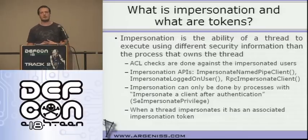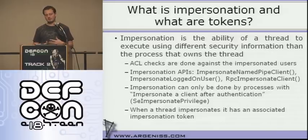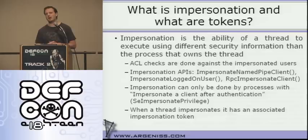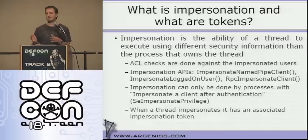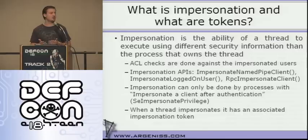So let's see some theory first about what impersonation and tokens are. Impersonation is when a thread can act as if it's running under another user account than the process the thread belongs to. For instance, we have a process that is running under the Network Service account. So that process can impersonate — when a thread starts to impersonate, it can start acting as if it were another user. When this thread starts to access resources such as the file system or registry, all the ACL checks are performed against the impersonated user and not the user that the process is running under.